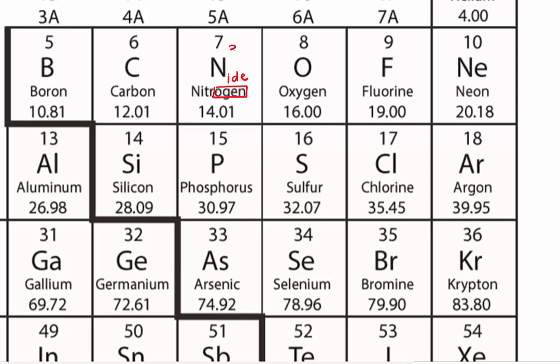The ion for nitrogen would be nitride. That is, when you have a 3 minus, we don't call it nitrogen anymore. The formula for the ion of nitrogen, which is N3 minus, this is called nitride, not nitrogen.